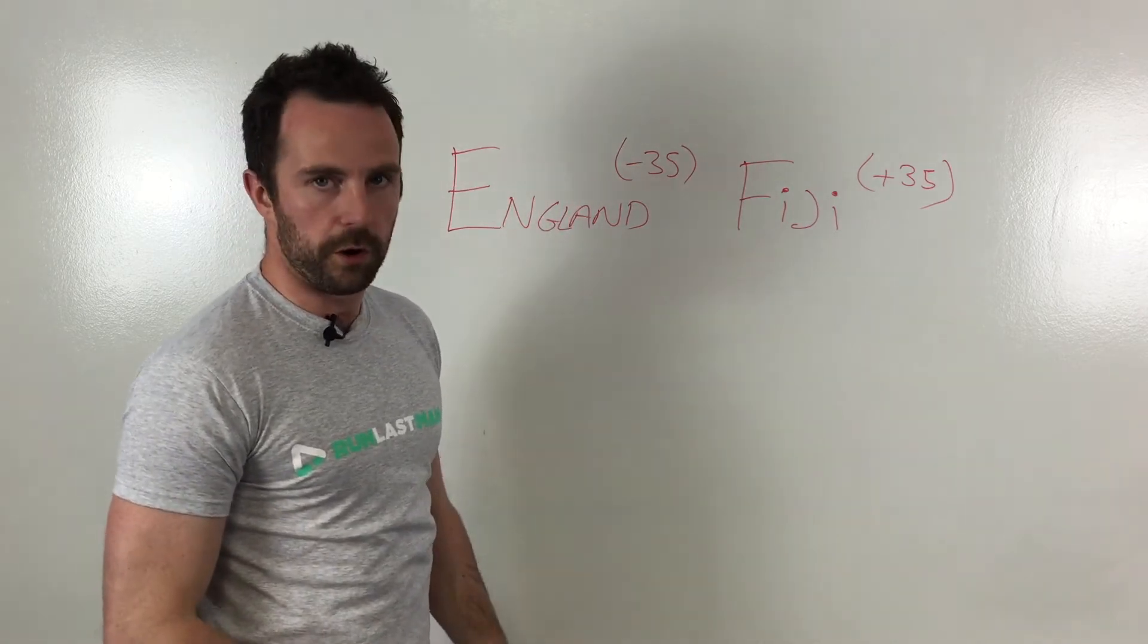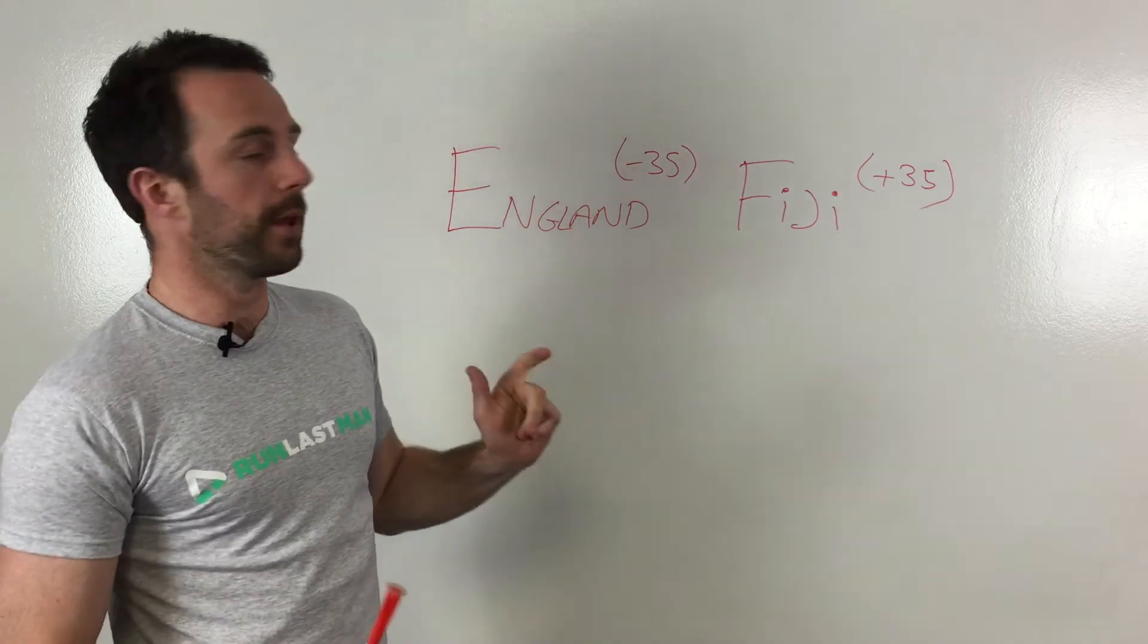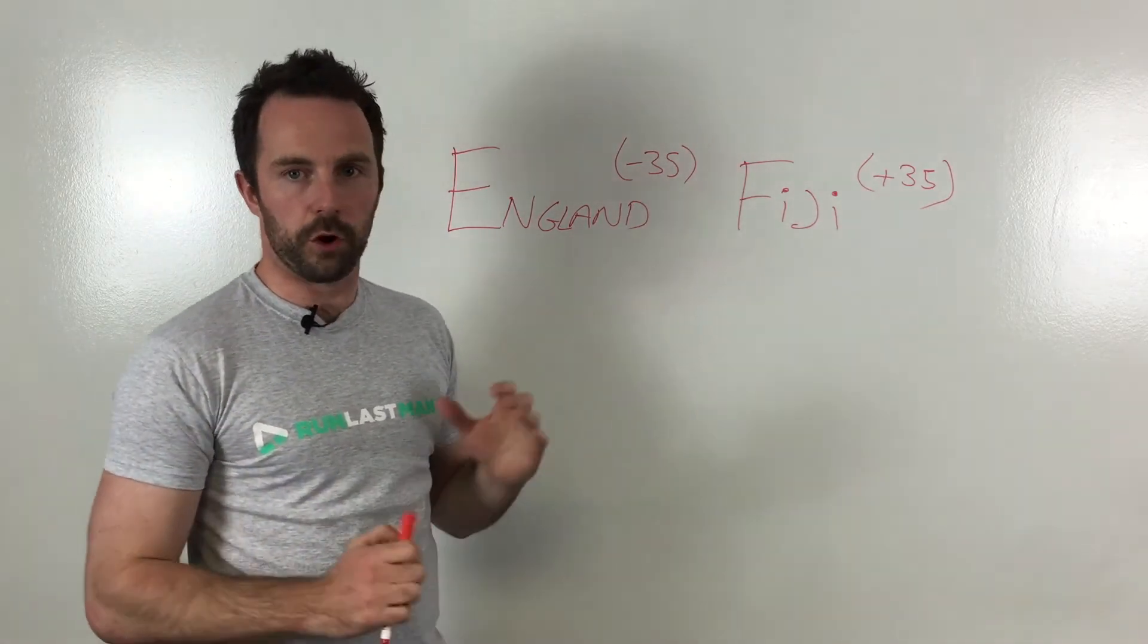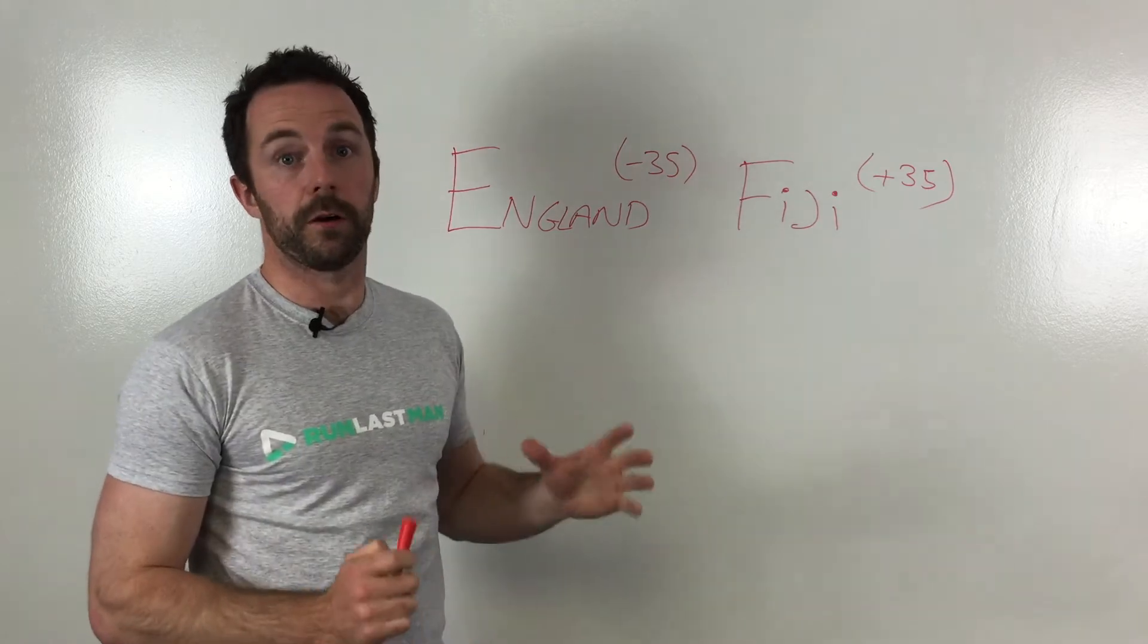You'll see here England have a minus 35 handicap and Fiji have a plus 35. What this essentially means is Fiji started off the match with a 35 point head start. England likewise started with a 35 point handicap.